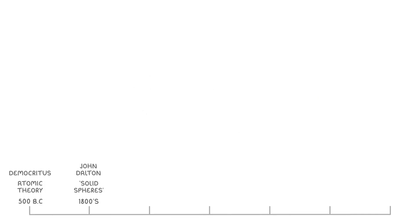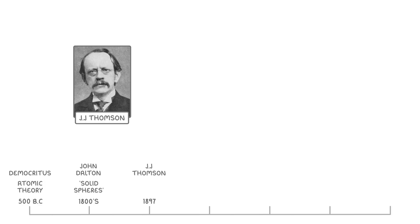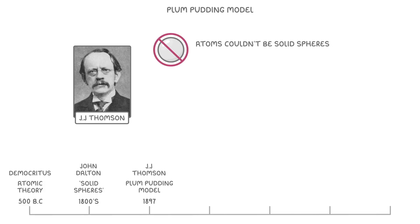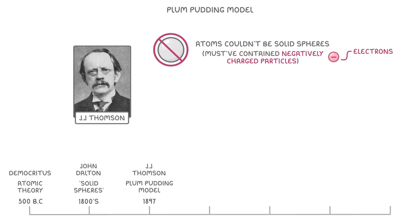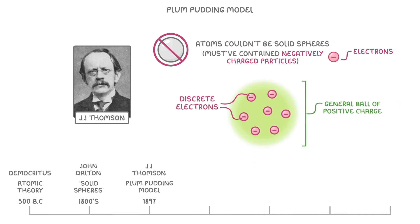A short while later, in 1897, JJ Thomson came up with the Plum Pudding model. He had done a series of experiments which showed that atoms simply couldn't be solid spheres, and instead that they must have contained negatively charged particles, which we now know to be electrons. Using this new evidence, he proposed that the atom was a general ball of positive charge with discrete electrons stuck in it.